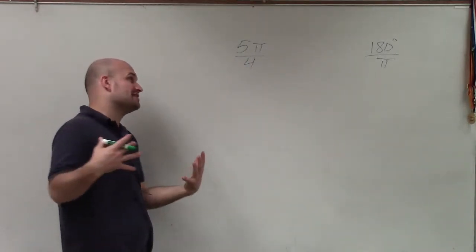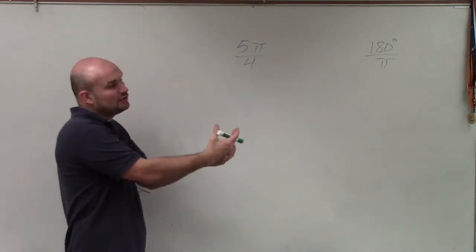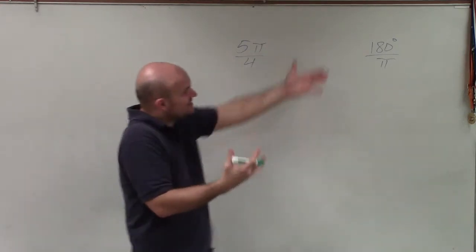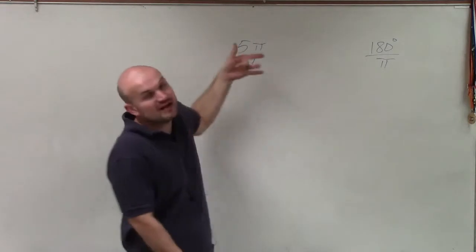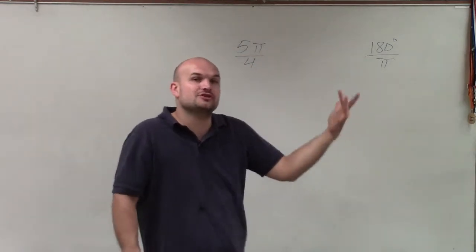So to do that, all I'm going to do is take my fraction in radians and multiply it by my conversion fraction, which, again, is an equivalent to fraction. It's not going to change the value of this angle. It's just going to convert it into degree form.